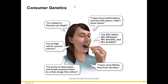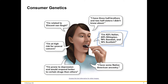Here's an example of consumer genetics. When you have your genetic test, you might be wondering: what is my ethnicity? Genetics can tell you that. For example, I am 42% Italian, 24% European, Swedish, Scottish — so you know your ancestry. Genetics can also tell you that you are prone to depression and would respond better to certain drugs than others, that you're at high risk of several cancers, or that you have half-brothers and half-sisters you don't know about. And of course, you might even be related to some famous person.